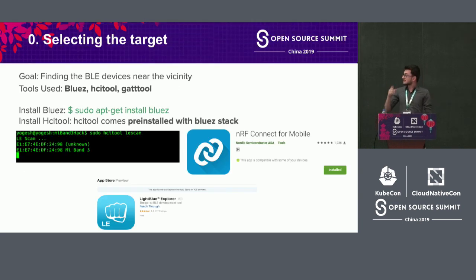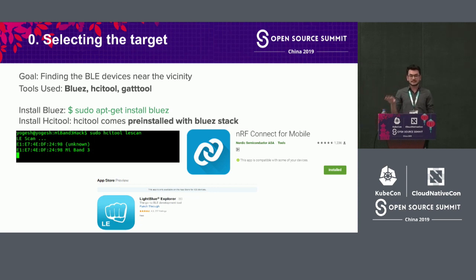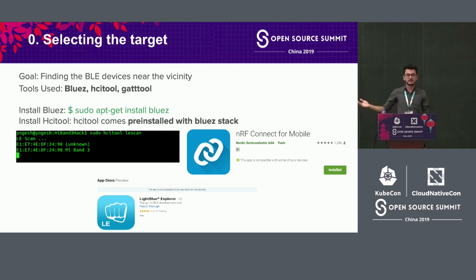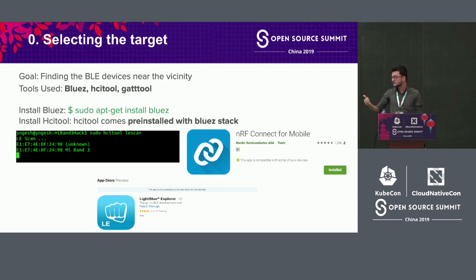Step zero — selecting the target. You want to find nearby Bluetooth devices. If you're on Kali or any Linux distribution, you have the BlueZ stack. BlueZ is as easy to install as running 'sudo apt-get install bluez.' All the tools I mentioned — Adsetool and Gatool — come pre-installed with BlueZ. Using the command 'sudo hcitool lescan' (lescan means low energy scan) you can scan all nearby low-energy devices. On Android you can download the NRF Connect app, and on iOS you can use NRF Connect or Light Blue.